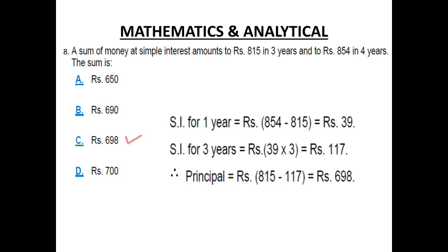The sum is Rs. 698. Simple interest for 1 year is 854 minus 815 equals Rs. 39. So simple interest for 3 years is 39 into 3 which equals 117. So the principal amount or the sum of money is 815 minus 117 and the answer is 698 which is given in the option C.